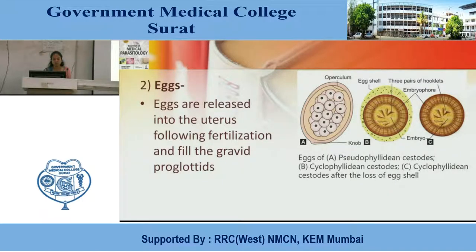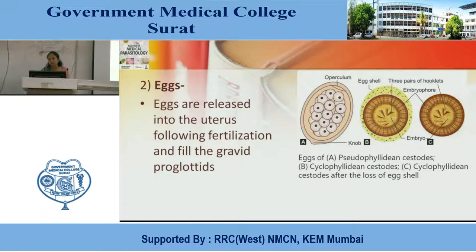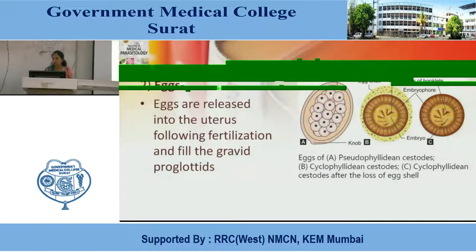Eggs of these organisms. As described in the figure: A is a Pseudophyllidean cestode egg; B is the egg of Cyclophyllidean cestode; C is Cyclophyllidean cestode after loss of egg shell. Eggs are released into the uterus following fertilization and fill the gravid proglottides. The Pseudophyllidean egg contains an operculum at the top and a knob at the other end; no hooks present. The Cyclophyllidean cestode egg contains egg shell and embryo with three pairs of hooklets. C is the egg that has lost the egg shell, showing embryo with three pairs of hooklets.